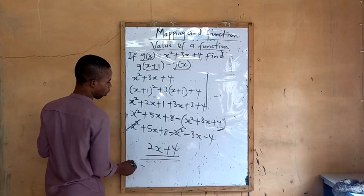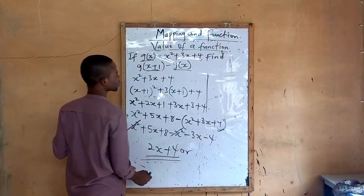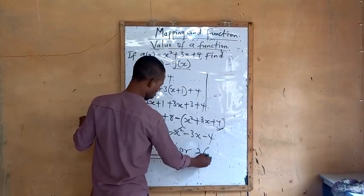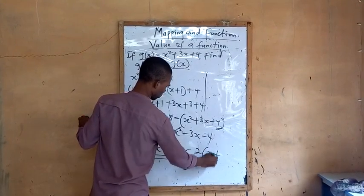So that's our answer. Or I'll just factorize it. What is common here? 2. 2 open bracket, x plus 2.